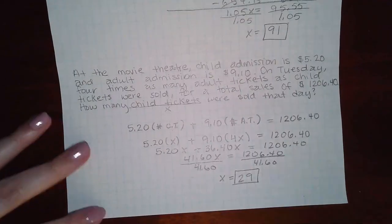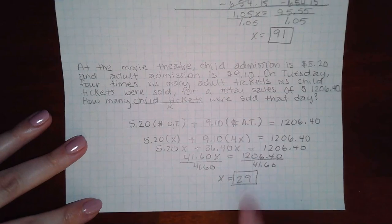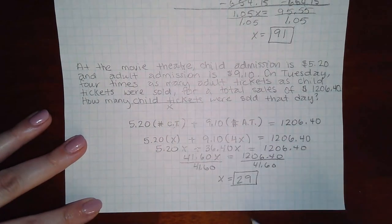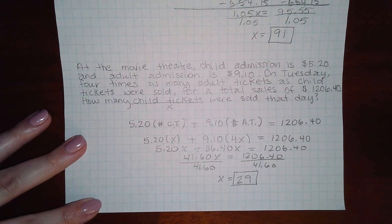And so then that is how many child tickets. Because X represented the number of child tickets. And that's all they were asking for. So we're done.